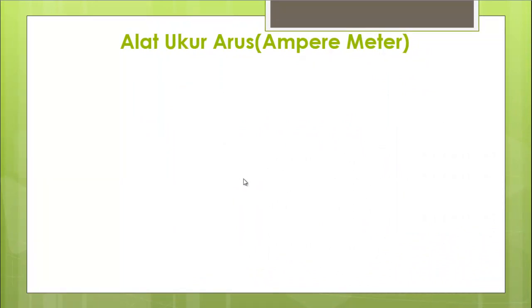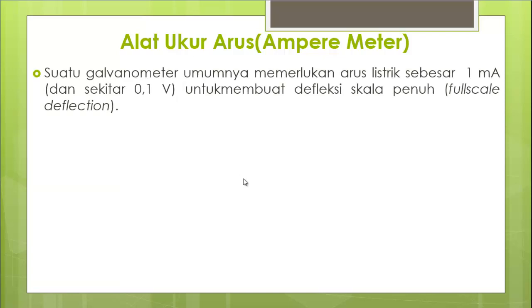Mengenai alat ukur arus atau ammeter: galvanometer menggunakan mekanisme PMMC, namun kendalanya adalah arus yang mengalir di dalam coil sangat kecil, yaitu sekitar 1 mA atau 0,1 volt untuk membuat skala defleksi penuh. Bagaimana kalau digunakan untuk mengukur arus yang melebihi skala tersebut? Cara yang digunakan agar bisa mengukur arus yang lebih besar adalah dengan menambahkan tahanan shunt (R_san).